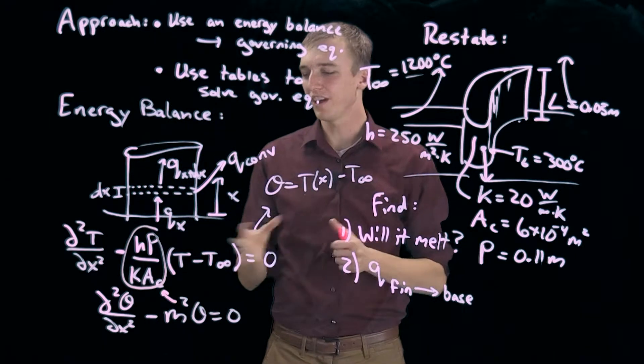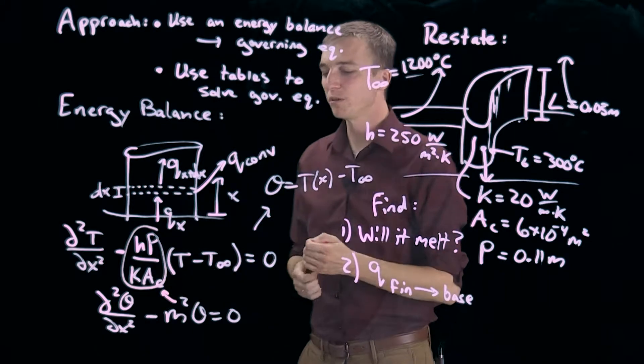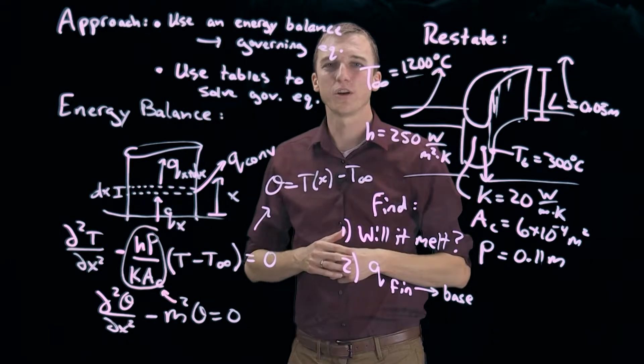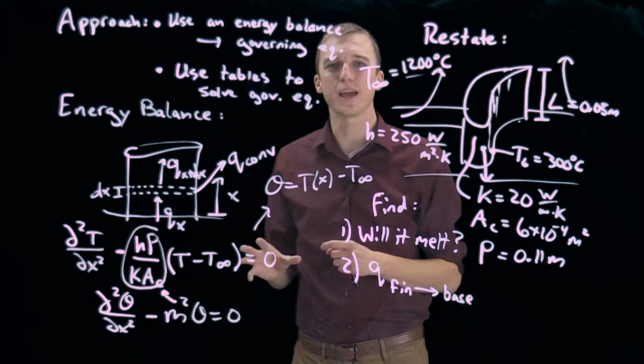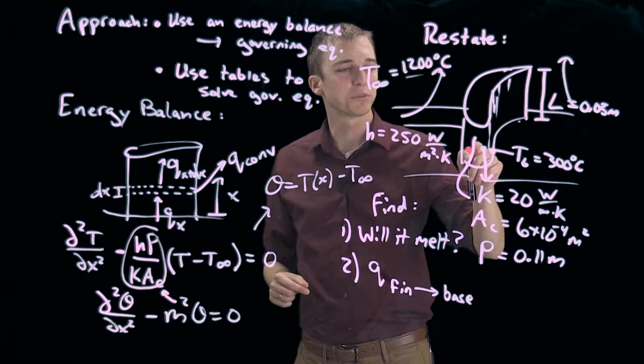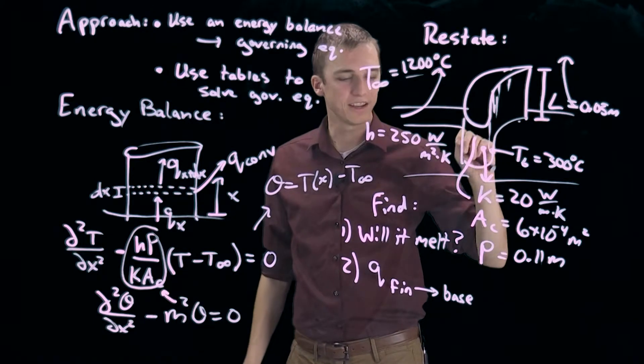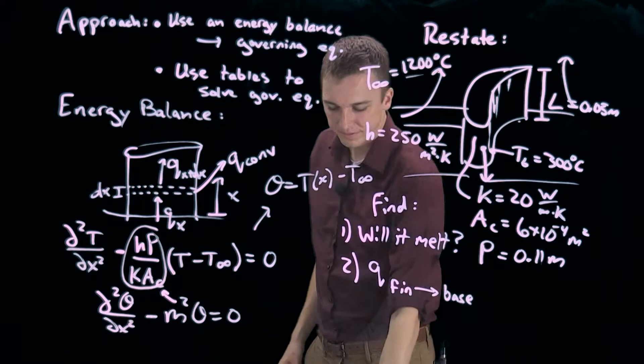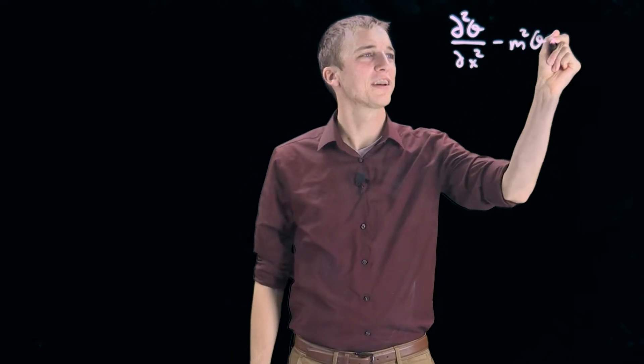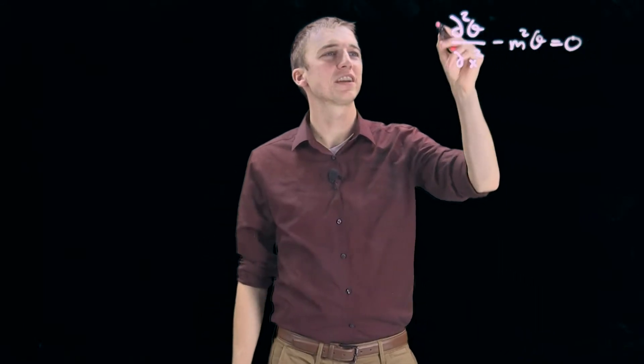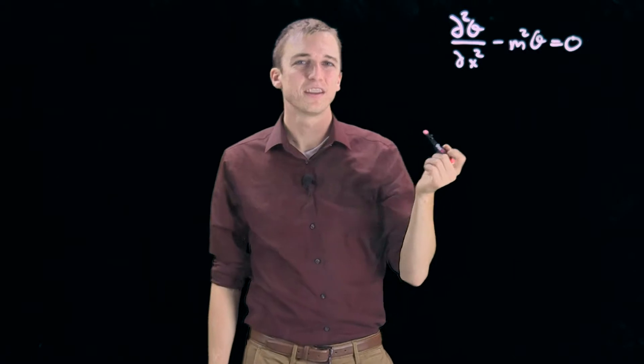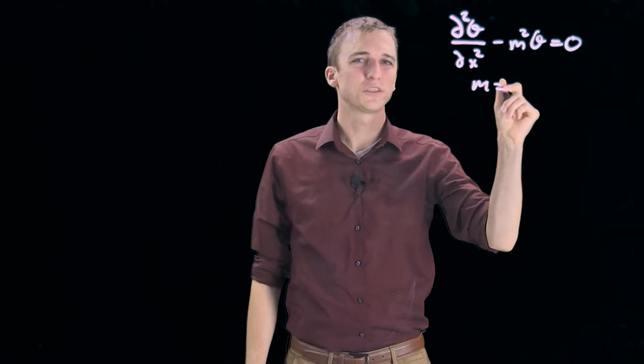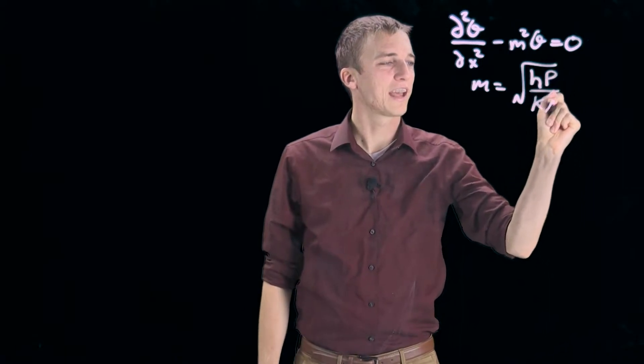So now what we're going to do is, we're not going to solve this equation. It's a second order homogeneous differential equation. We already know the solution. So instead of solving it, we're going to look up tabulated solutions and use those tabulated solutions to find the temperature profile and apply that profile to the top surface, and in order to find the heat transfer from the fin.